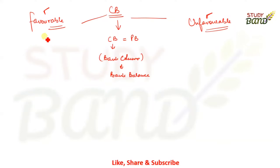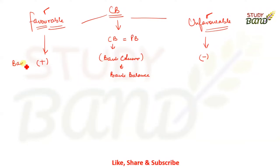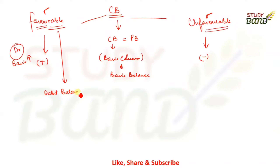What is a favorable balance? As the name suggests, it is positive for you — a favorable balance is a debit balance. An unfavorable balance is a negative balance. When balance decreases, it is a credit balance. So: favorable balance means debit balance, and unfavorable balance means credit balance.